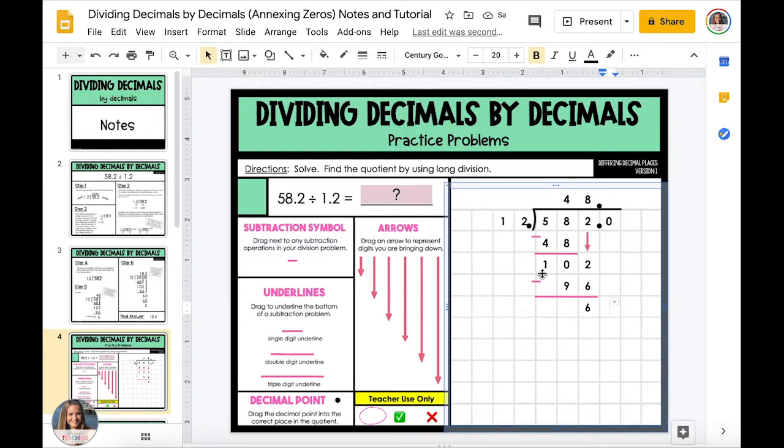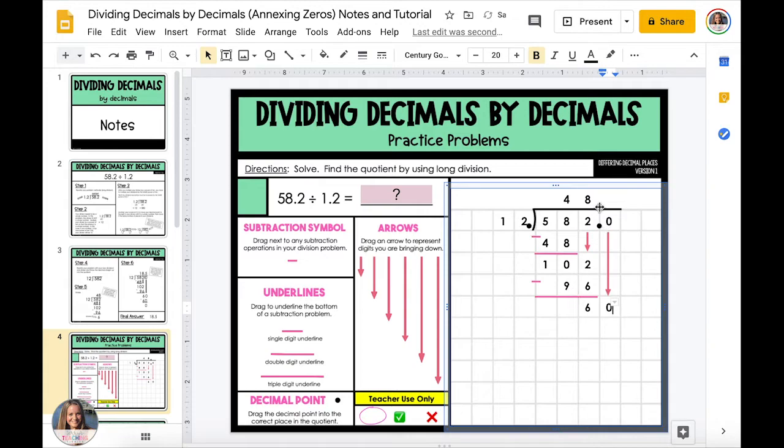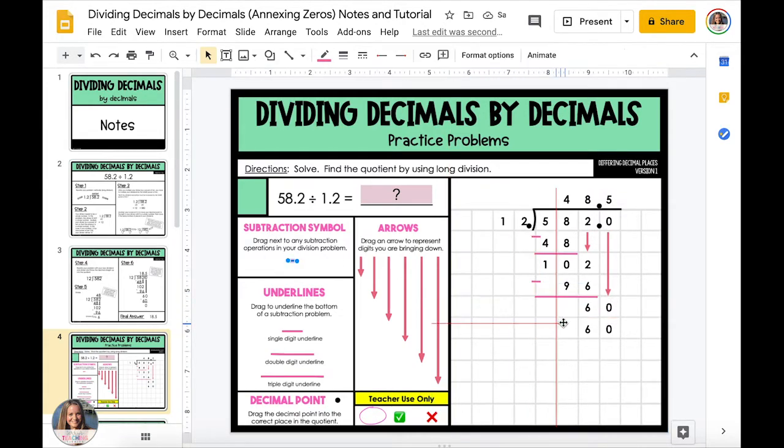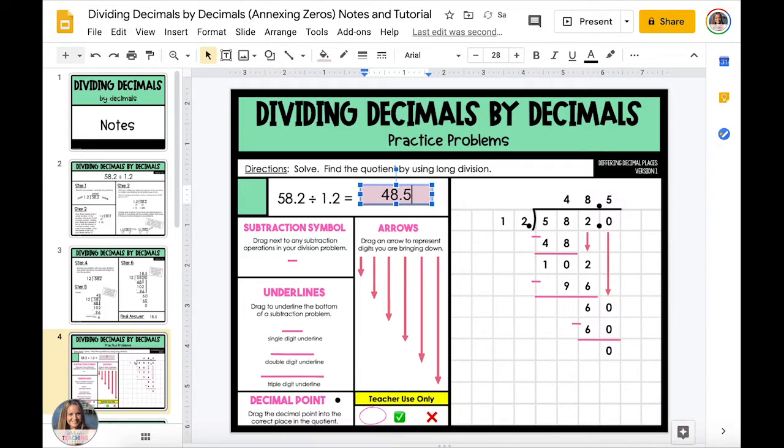So it's still worth 582 but we now have a zero that we can bring down to continue dividing. Then we can divide 60 by 12 which is 5, and when we multiply that we end up with an answer that no longer has a remainder. Our final answer is 48 and 5 tenths.